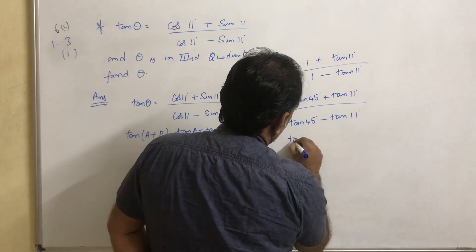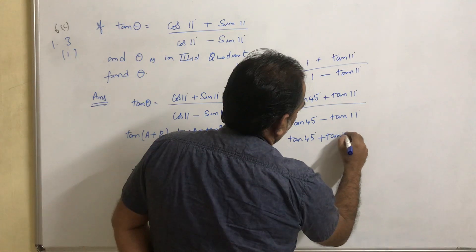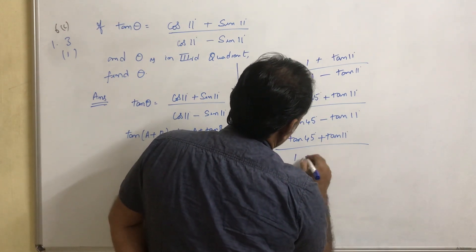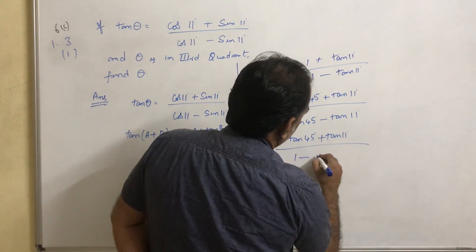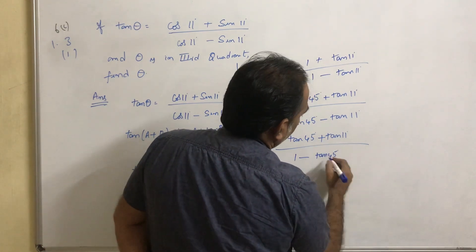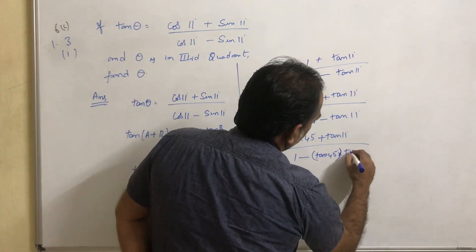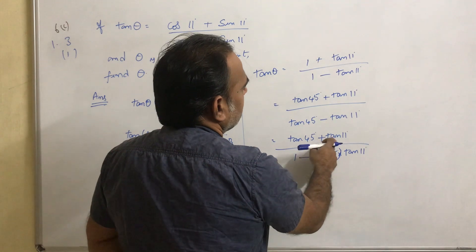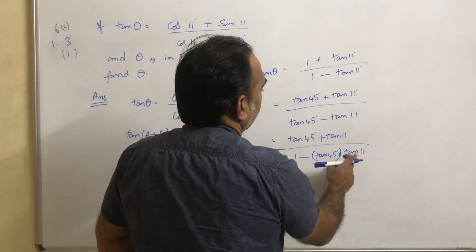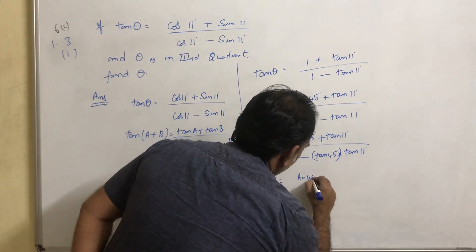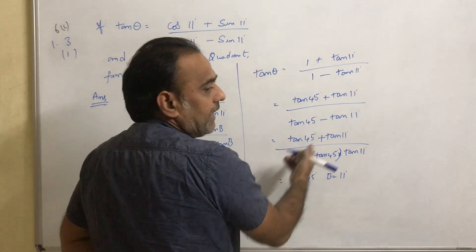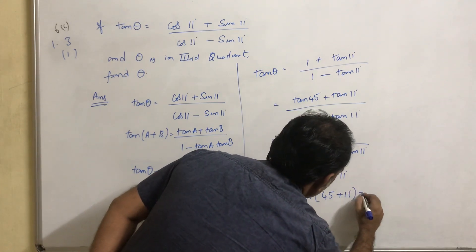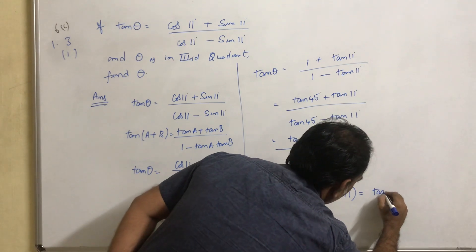This can be written as tan 45 plus tan 11, divided by 1 minus tan 45 times tan 11. This is in the form of tan(a+b) where a equals 45 and b equals 11. So this equals tan(45 plus 11), which is tan 56 degrees.